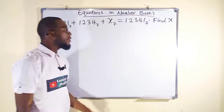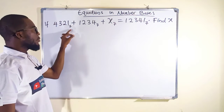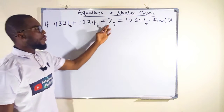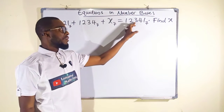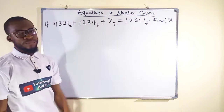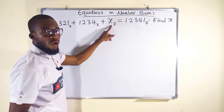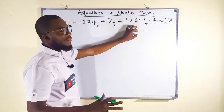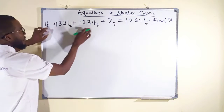The first question says: if 4321 in base 7 plus 1234 in base 7 plus another unknown number in base 7 equals 12341 in base 7, we are asked to find this unknown number. Since we are adding all three to obtain the result, we only have one unknown. We are free to add the two known numbers together, then remove that sum from the result to obtain the unknown.